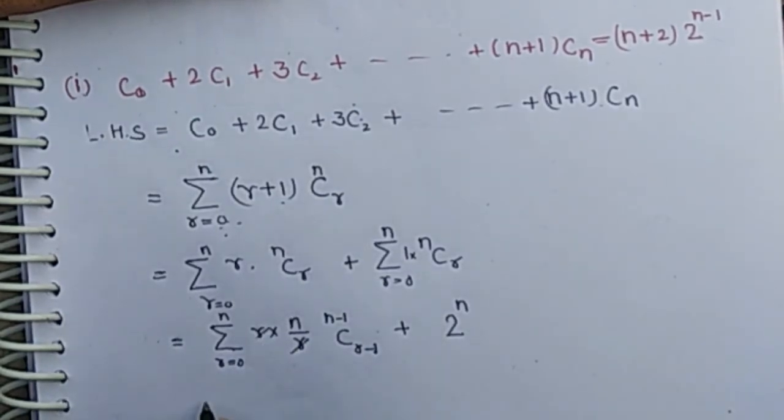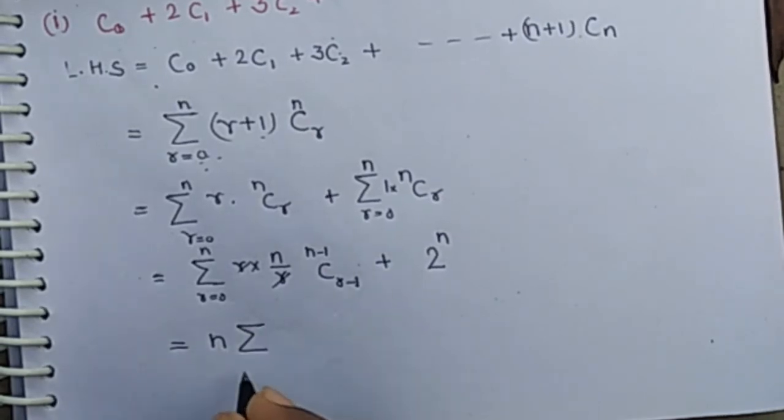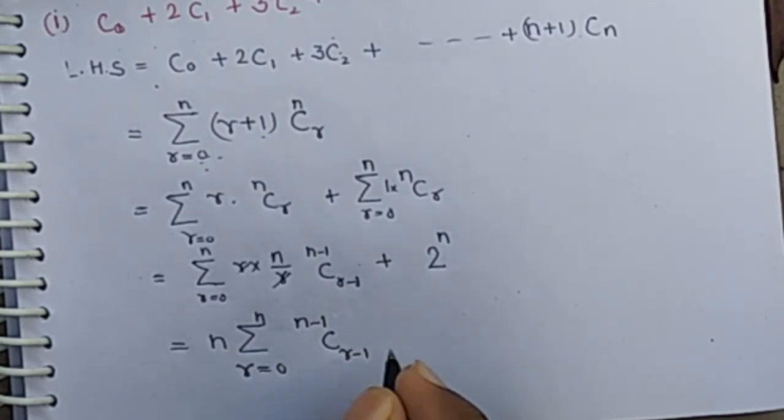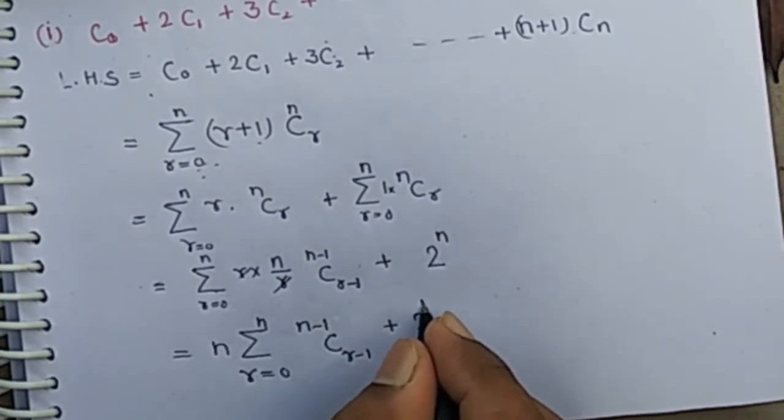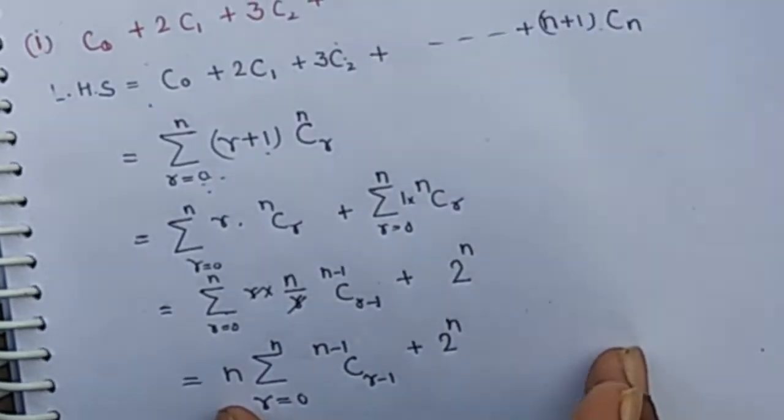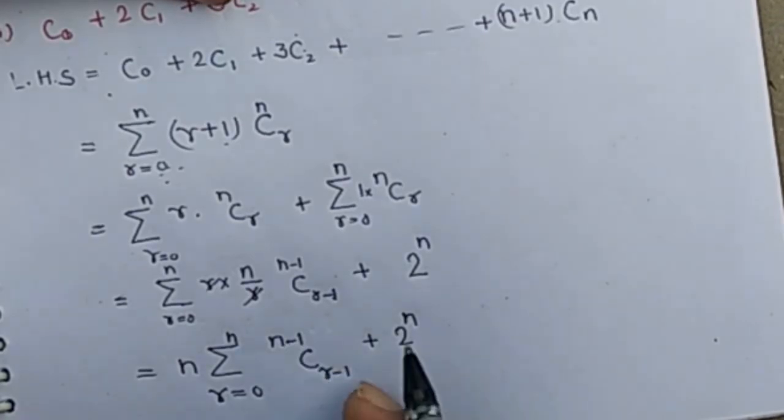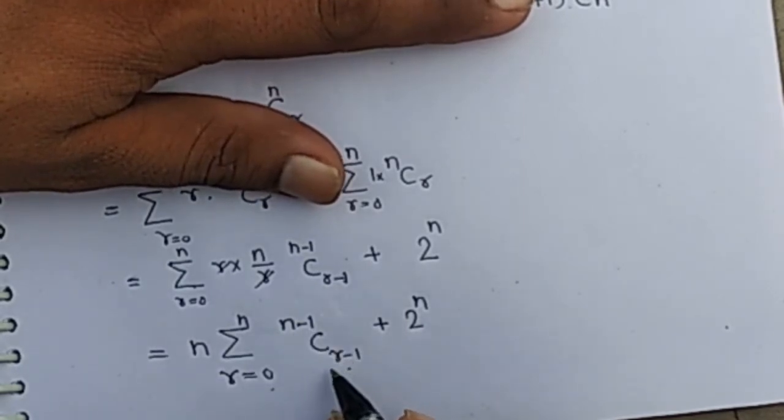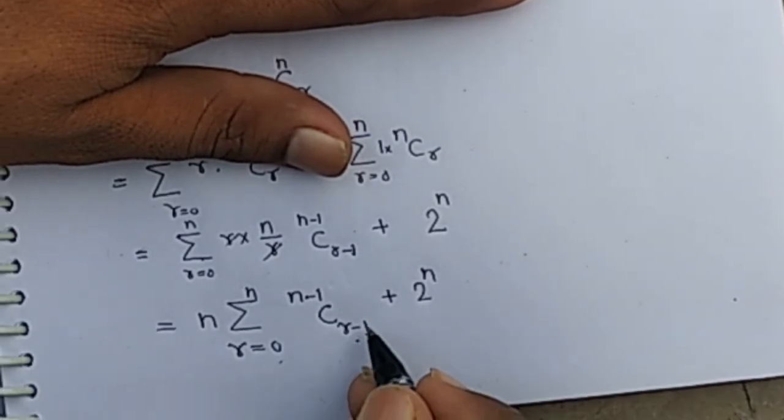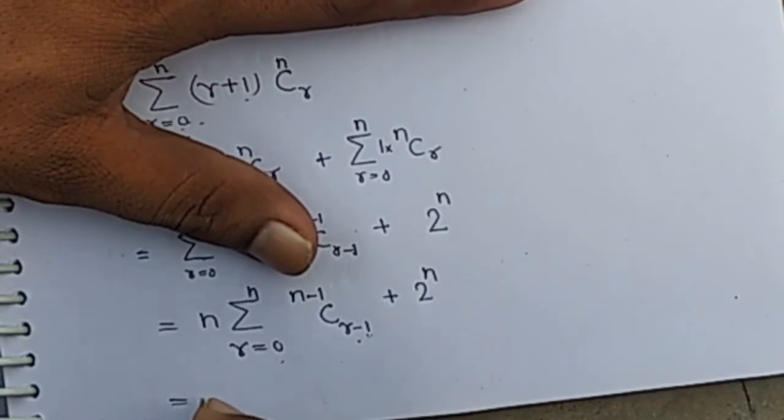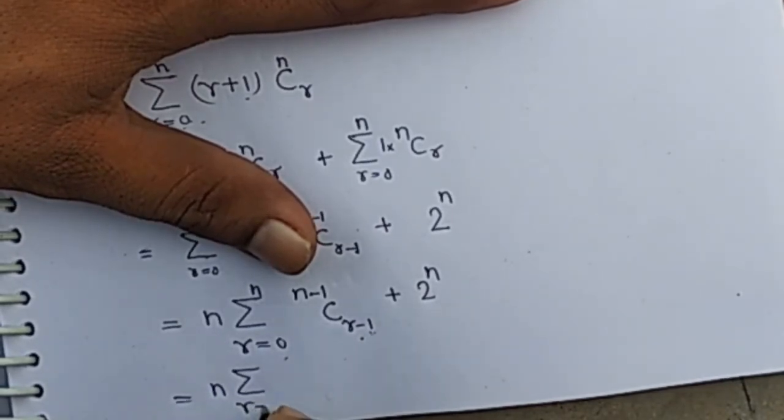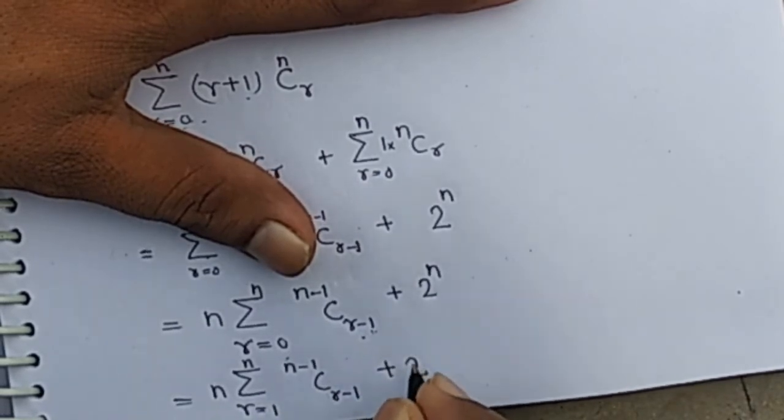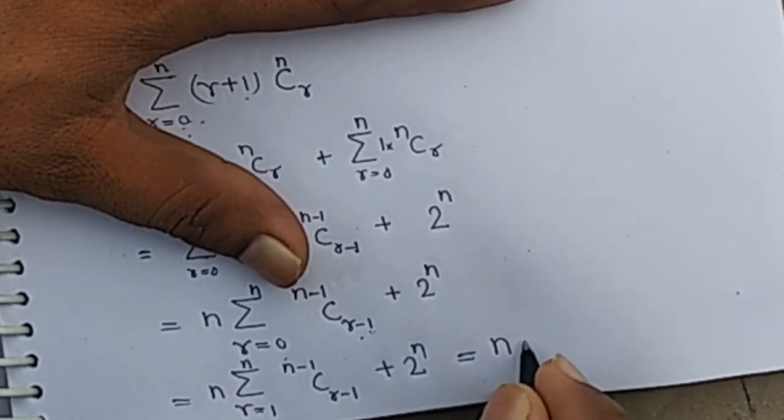The r cancels out with n by r. We get n times the sum from r equals 0 to n of (n-1)C(r-1) plus 2 to the power n. If we put r equals 0, we get (n-1)C(-1) which is negative, so we left the first term and we start from r equals 1.